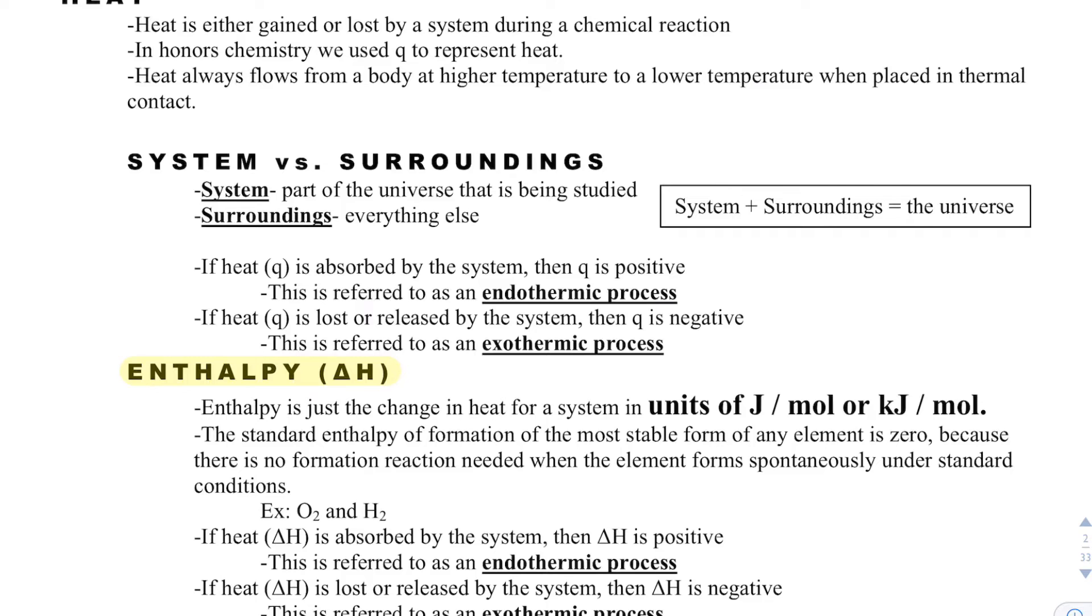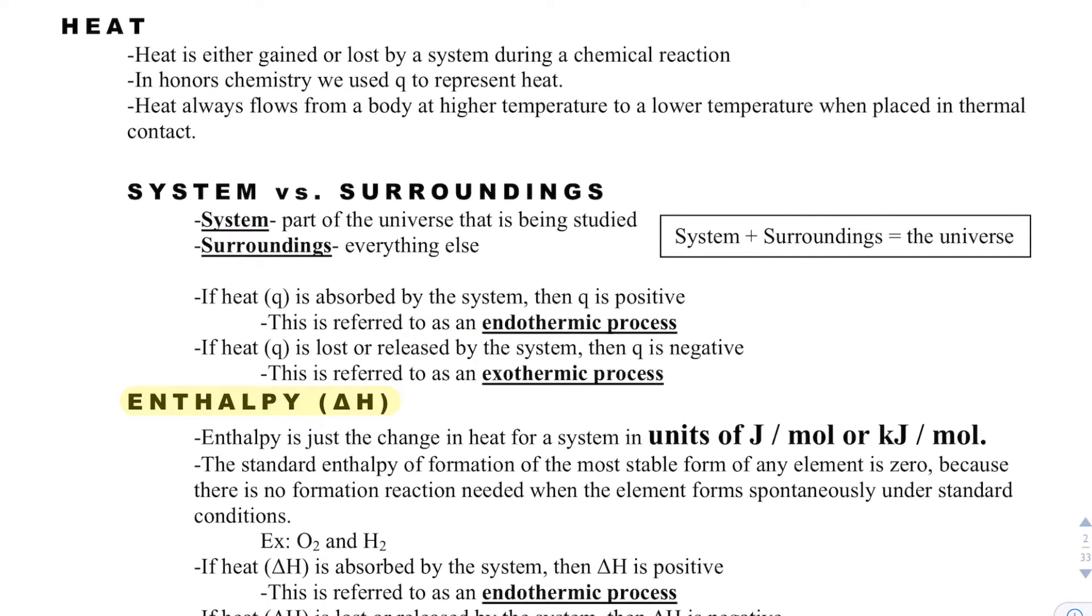We have seen that different chemical processes can be endothermic or exothermic. If heat is absorbed by your system that's an endothermic process, and if heat is lost or released by the system, that's an exothermic process.